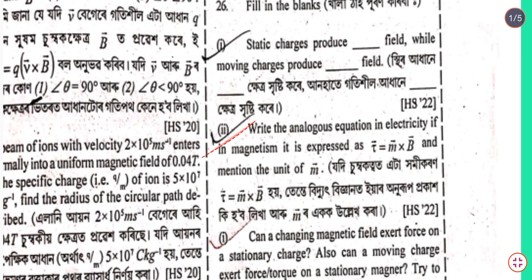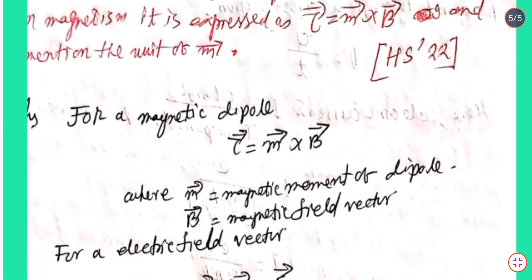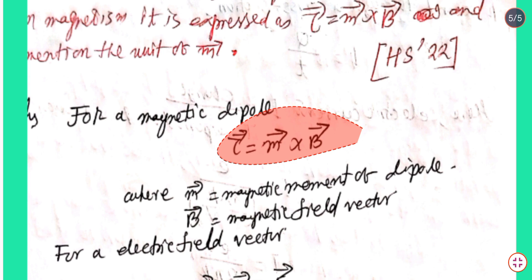Question number 26, part 2: Write the analogous equation in electricity if in magnetism it is expressed as τ = vector m × vector B, and mention the unit of vector m. For a magnetic dipole, τ = vector m × vector B, where vector m is the magnetic moment of the dipole and vector B is the magnetic field vector.